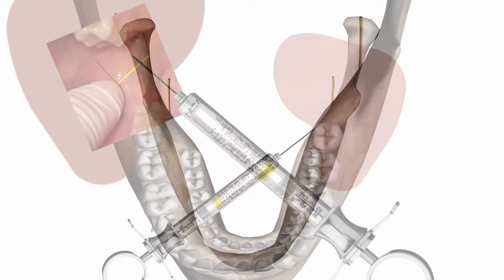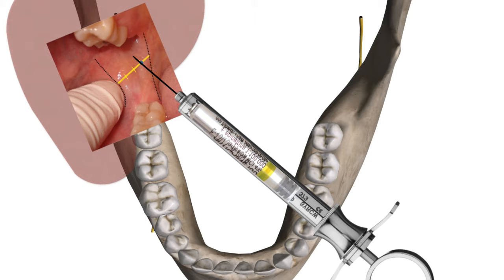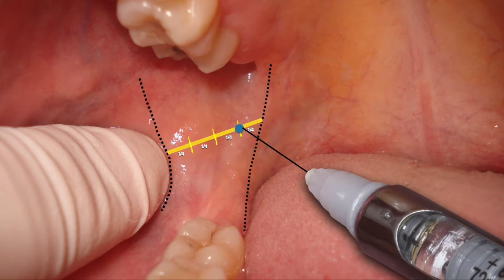Keep in mind that the correct positioning of the syringe is with its body at the level of the premolar teeth on the opposite side of the puncture. In some cases, when the mandible is very divergent, you can position the syringe a little more posteriorly, almost on the molar on the opposite side.